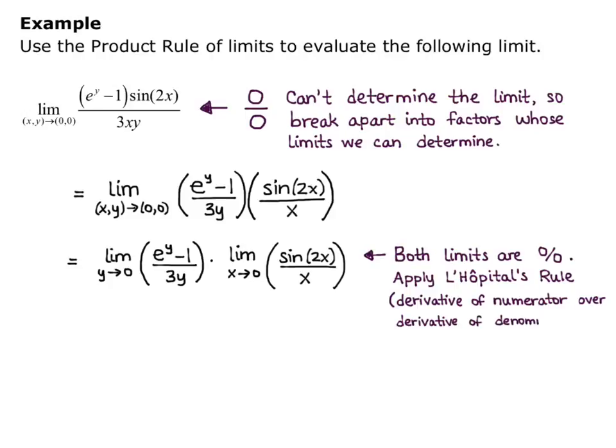We do each derivative separately, and we still apply the limit as y goes to 0. I have the limit as y goes to 0 of the derivative of e^y - 1, which is just e^y, and the derivative of 3y is 3. So I have the limit as y goes to 0 of e^y/3.